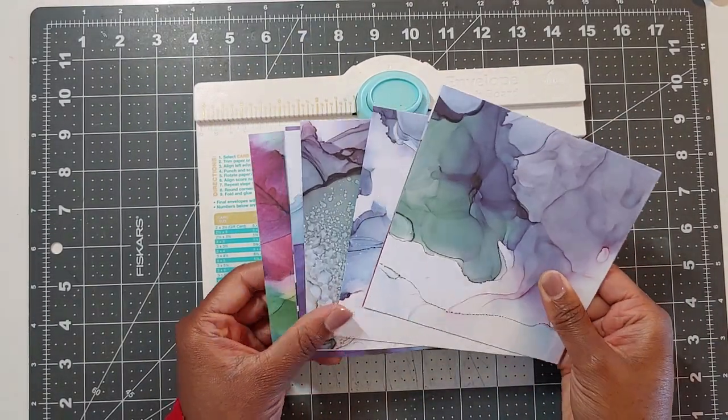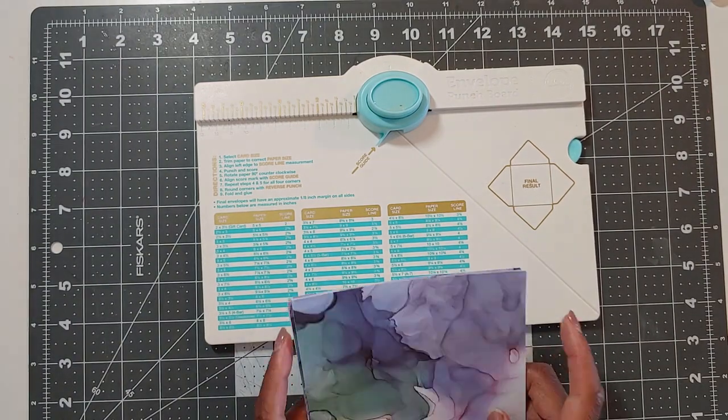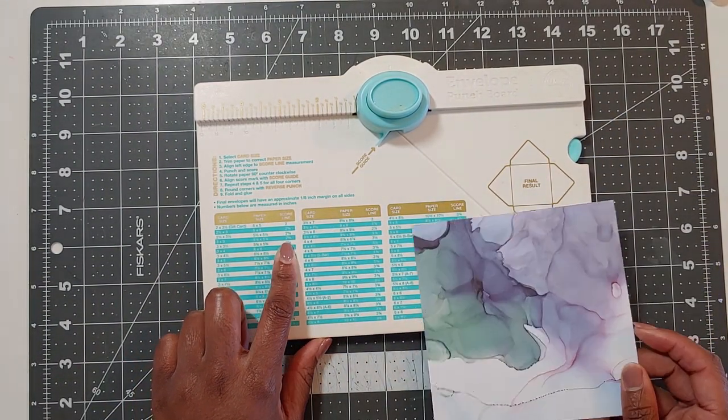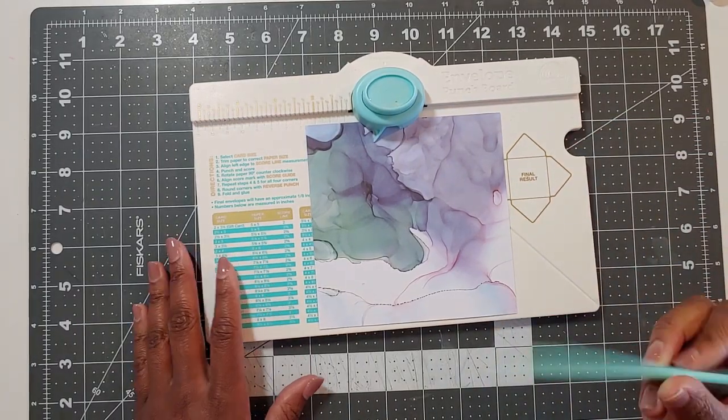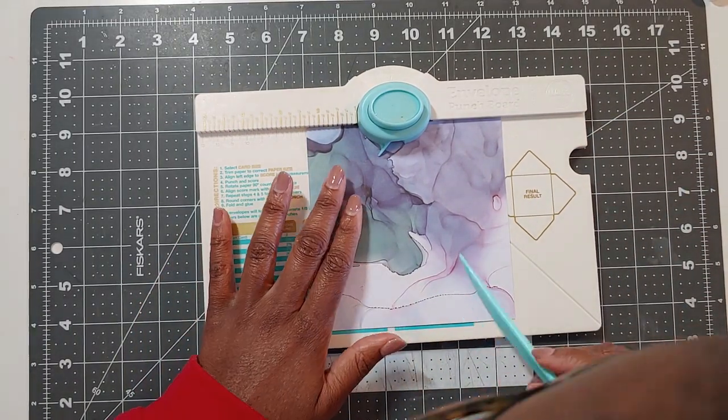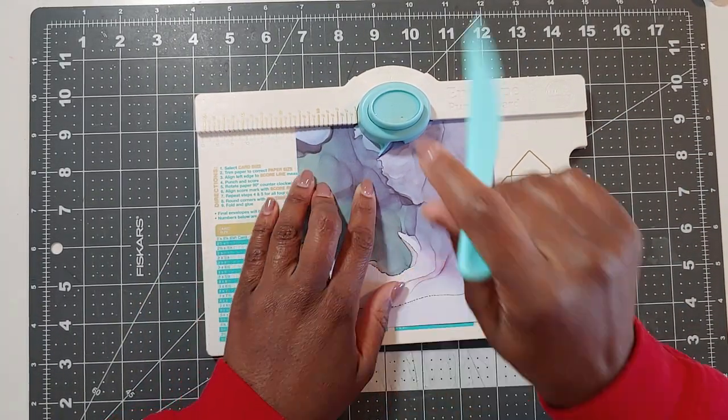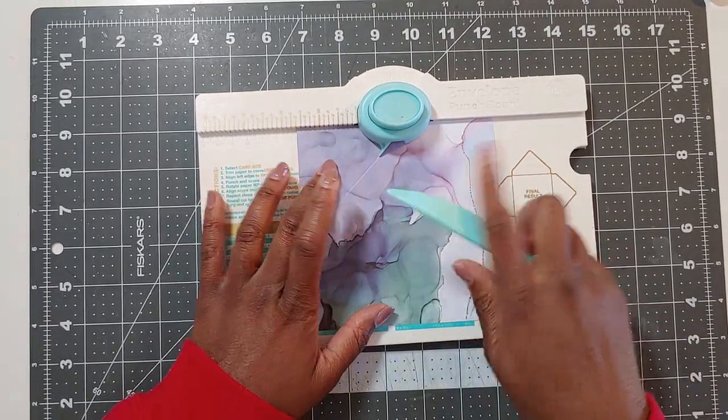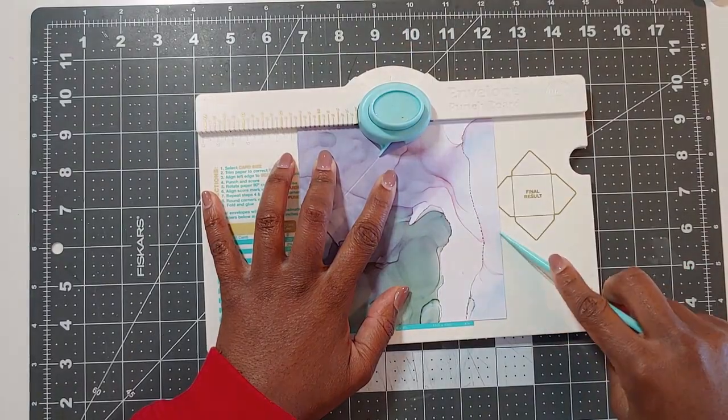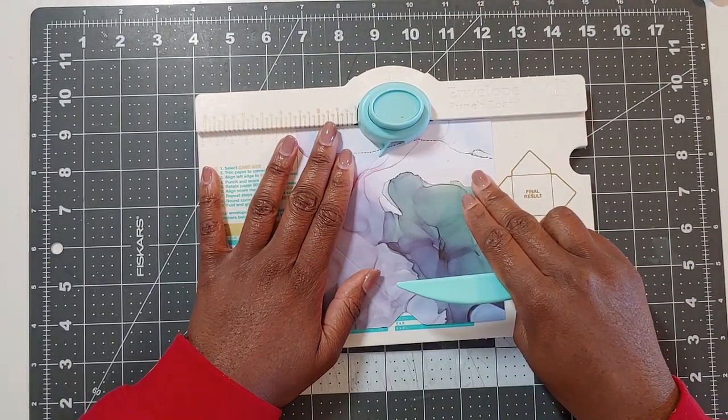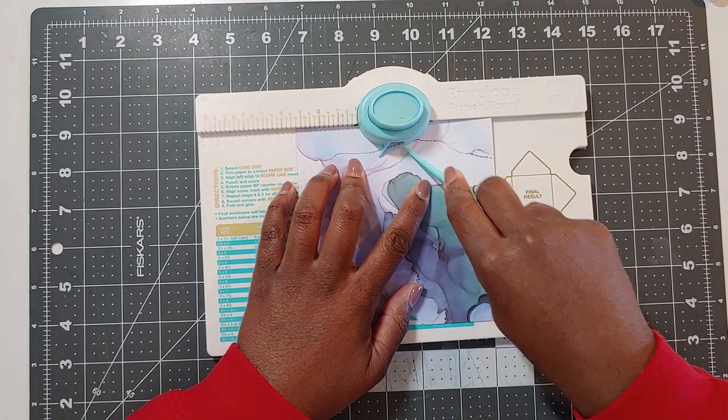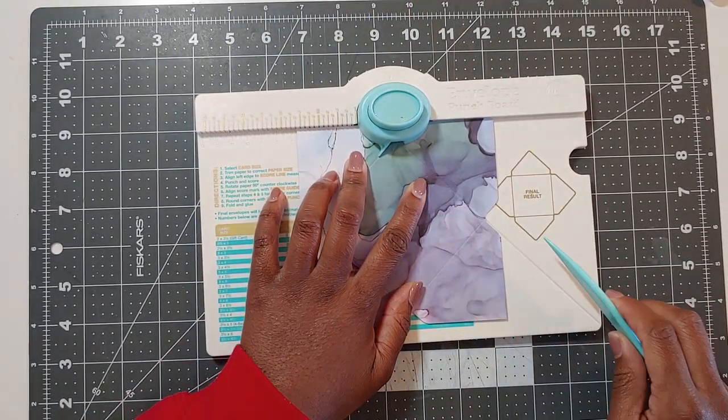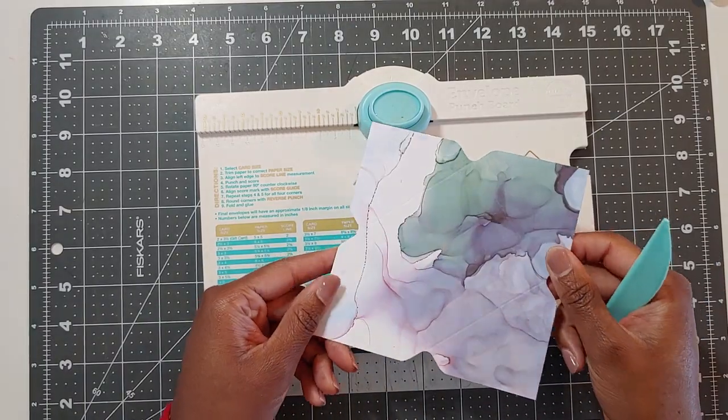So to make the envelopes with the punch board it's telling me that I need to take my piece of paper and I need to make the first score at I believe two and five eighths inches. So I'm just lining it up there two and five eighths and then I'll punch and score, turn the paper and line the score up with that little blue bit, punch and score again, and do that all the way around. So just punch score, punch score, punch score. Ta-da! There we go.